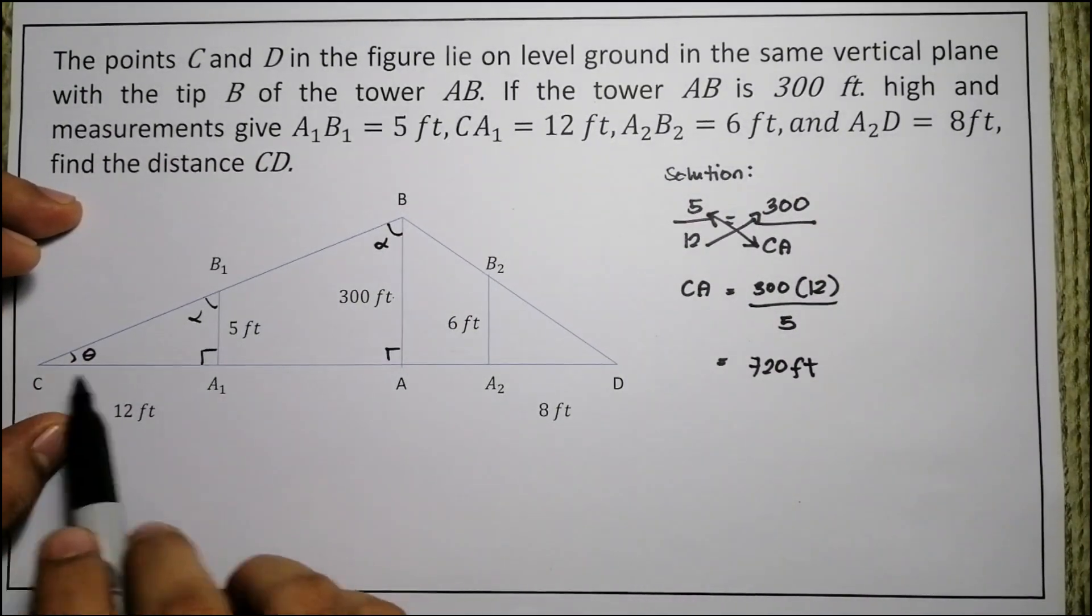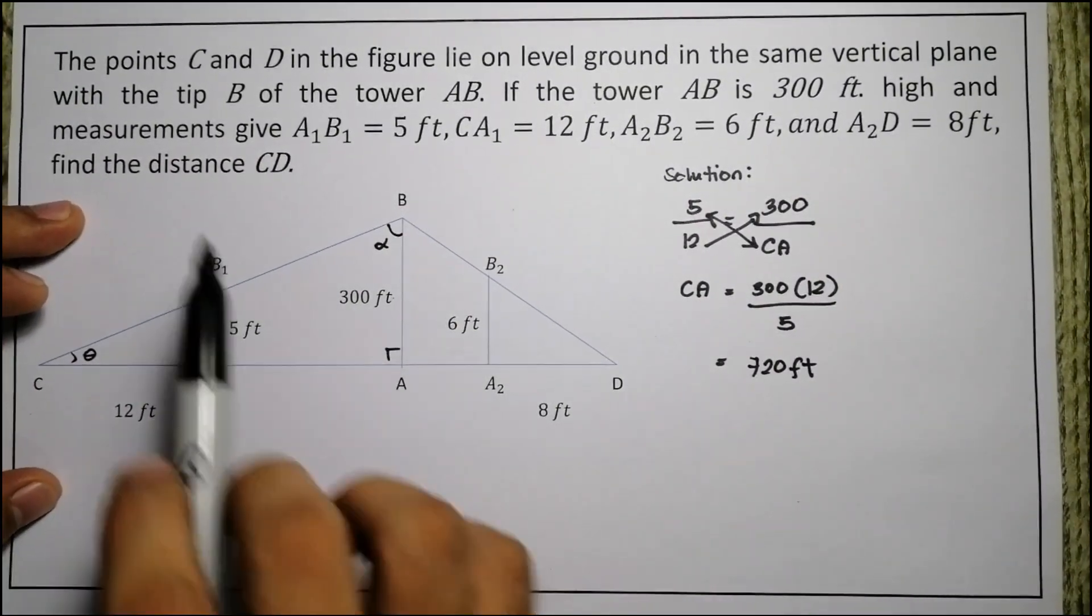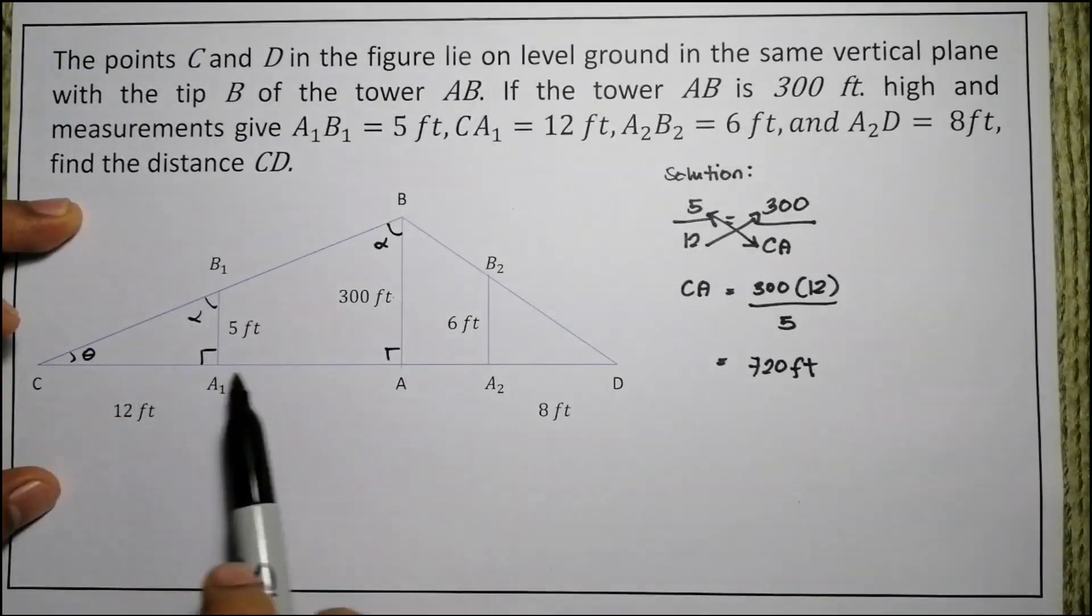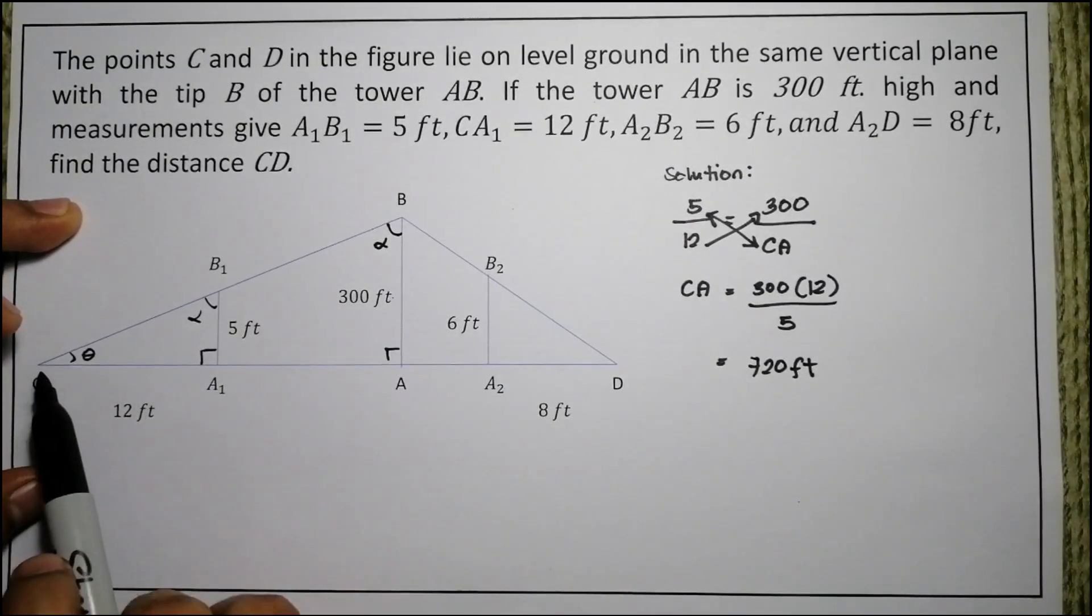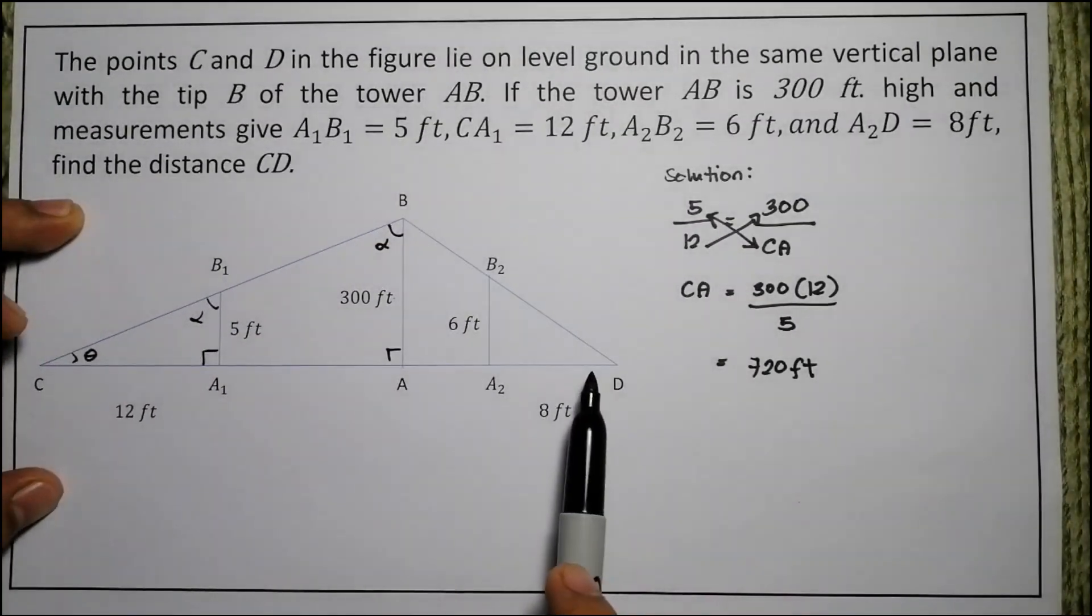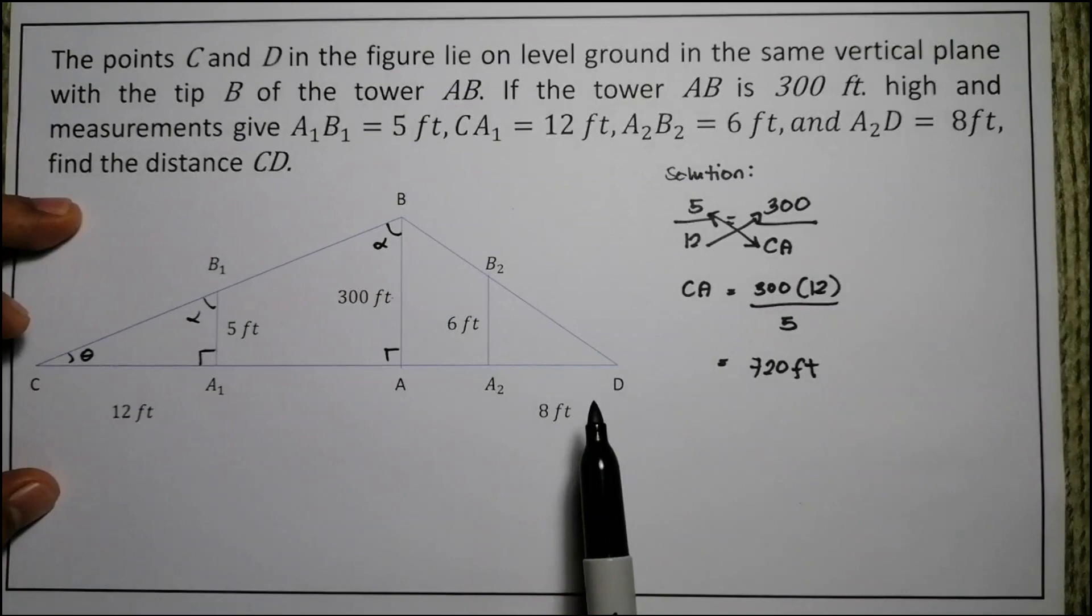Now we've solved this, but what we're looking for in the problem is the distance C to D. So to get C to D, we need to find the remaining distance A to D. Now, how do we solve that? The same. We'll just apply similar triangles.